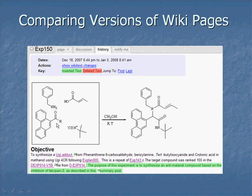Comparing two versions of any page: knowing there's been a change is one thing, but I'm more interested in seeing what the change was. Most wikis, including WikiSpaces, make that very easy. If I compare two versions, new content is shown in green and deleted content in red.